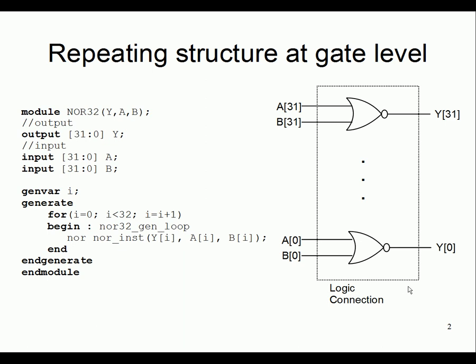Basically, two 32-bit inputs and one 32-bit output, and the functionality is bitwise NOR between them. If we want this in gate-level modeling using what we've learned so far, we would instantiate 32 NOR gates and connect each bit of the input ports and the output of each instance to the corresponding bit of the output port. We need to write 32 instantiation descriptions with port connections and wire connections.